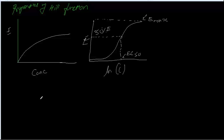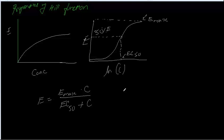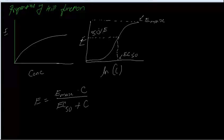As you are aware, E is equal to Emax times C over EC50 plus C. This equation, as you can see: E = Emax × C / (EC50 + C).